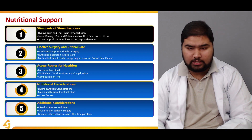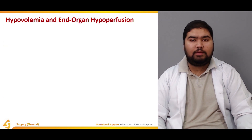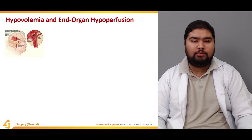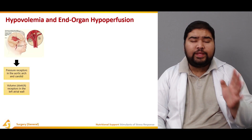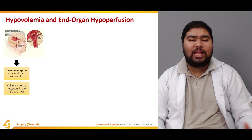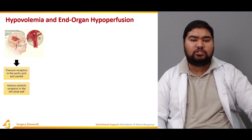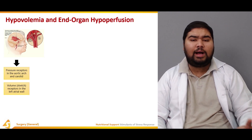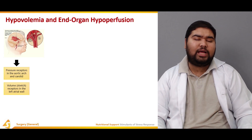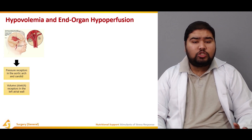We'll get an idea about body composition in general, as well as comparative body composition. Then we'll talk about nutritional status, age, and gender. Starting off with hypovolemia and end-organ hyperperfusion — this is a very good flow diagram which would help you understand the need of nutrition and how hypovolemia and end-organ hyperperfusion affects a patient.